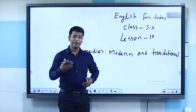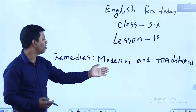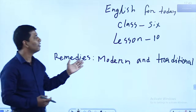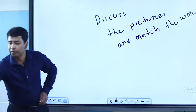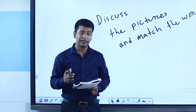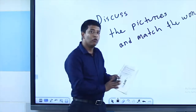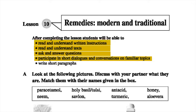Hello my students, how are you? Today we are going to discuss something very important related to modern and traditional remedies. Please open lesson 10 from your English for Today, Class 6. The outcomes of today's lesson include: read and understand written instructions, read and understand text, ask and answer questions, participate in short dialogues and conversations on family topics, and write short paragraphs.